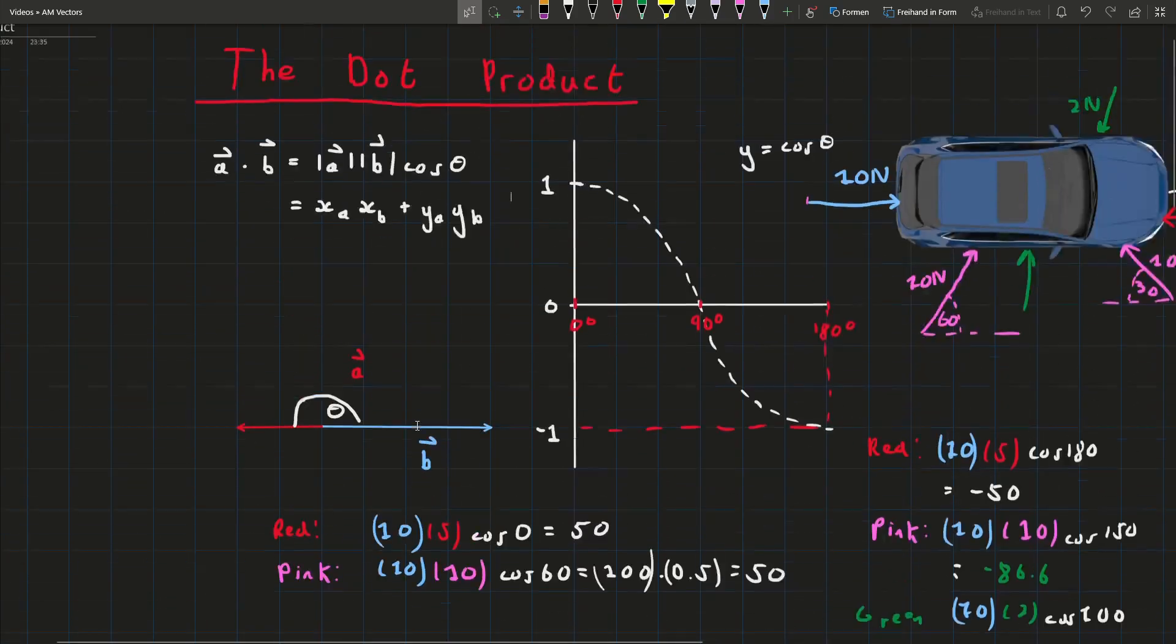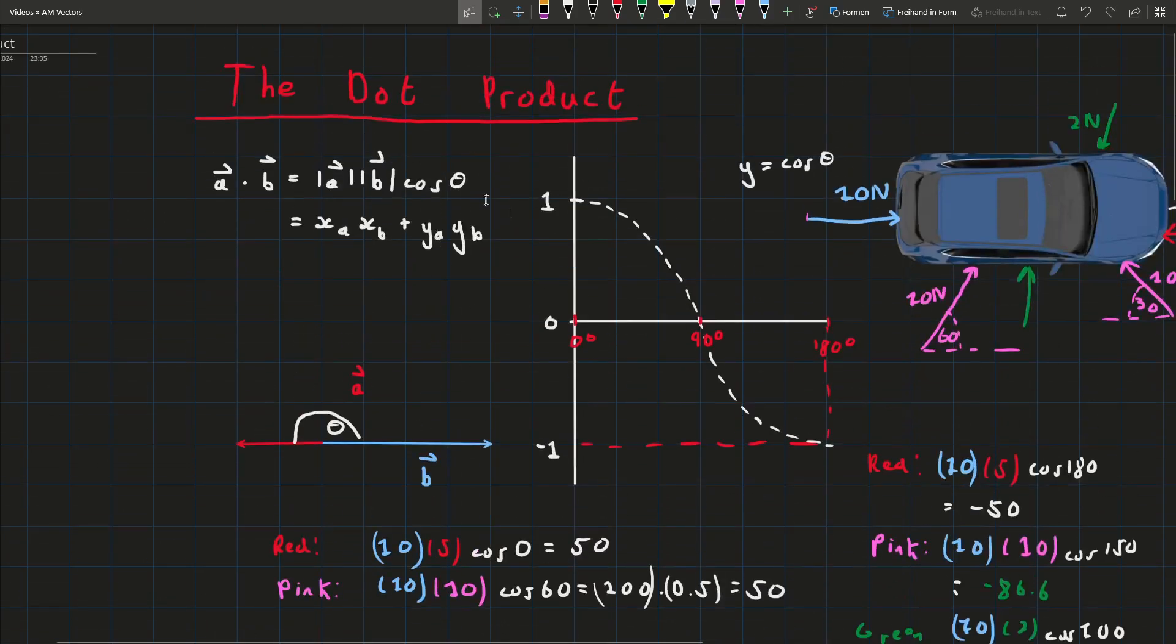All you had to do was figure out what the dot product was using this formula and then you could easily figure out the magnitude of the two vectors and then let these equal to each other and then you can find the angle by letting these two different definitions of the dot product equal to each other.